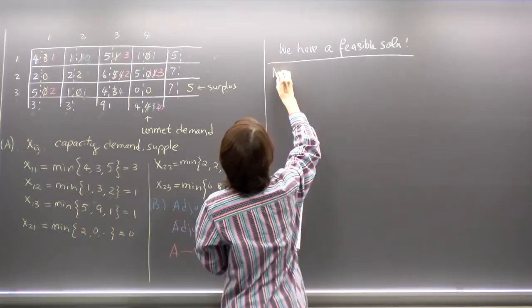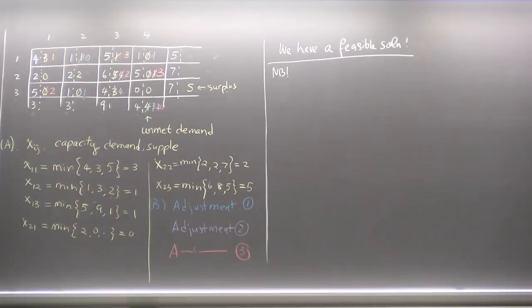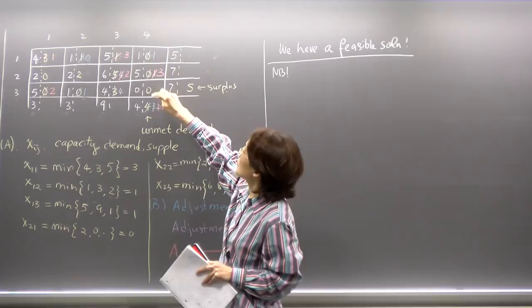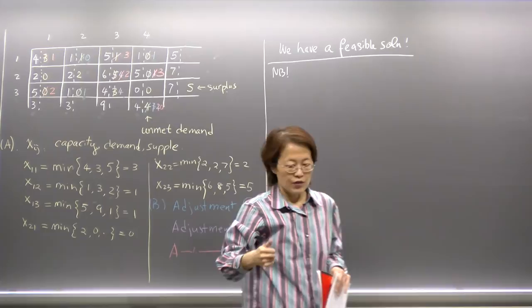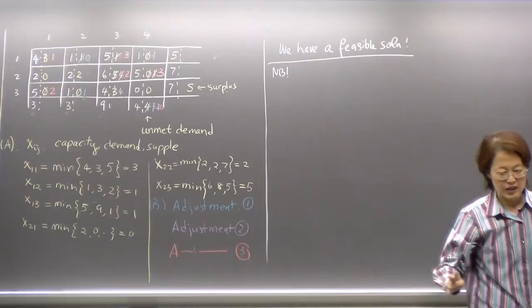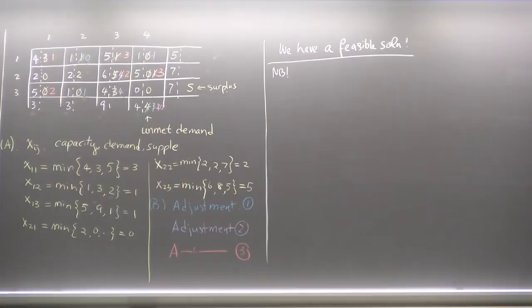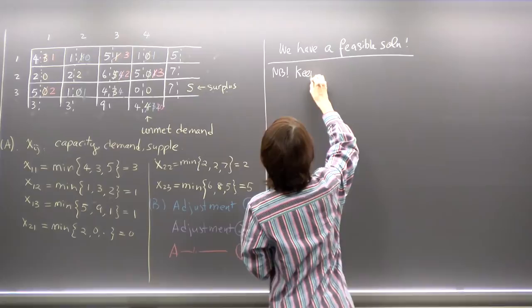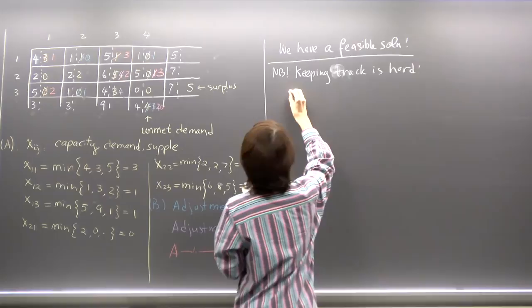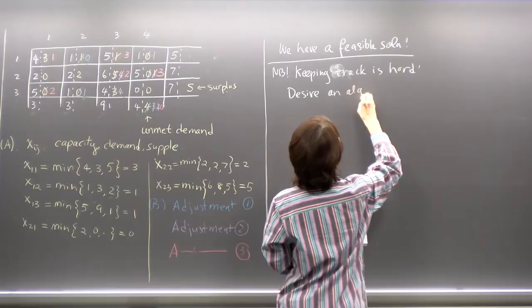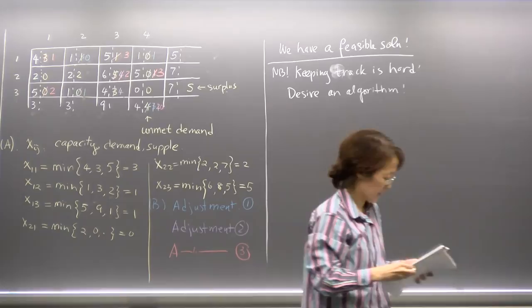It's quite difficult to find this path. For this 3×4 problem, if the problem is a bit bigger, it will be very difficult to keep track of which paths you tried and which didn't work. So keeping track is hard if you just do it by eye. One would design an algorithm to help you. That algorithm is called a labeling scheme — you want to find this flow by the way you label.